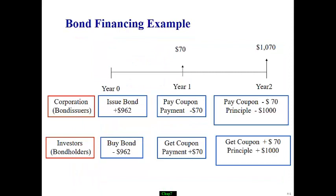Let's take a look at cash flow associated with bond financing. From a corporation's point of view, firms issue bonds and raise money. They have to pay coupon payment and principal repayment to investors. Investors will purchase bonds and then receive coupon payment and principal repayment in the end.